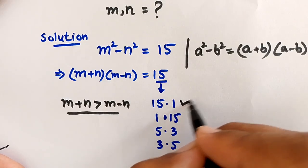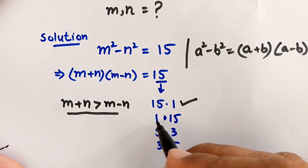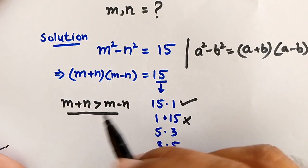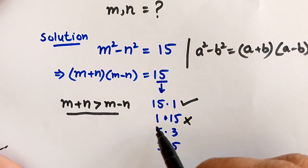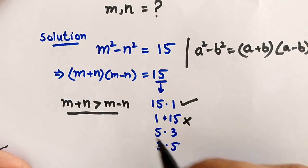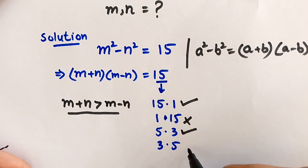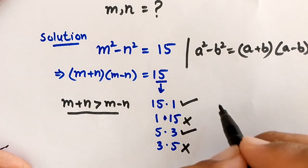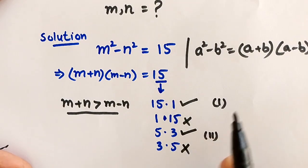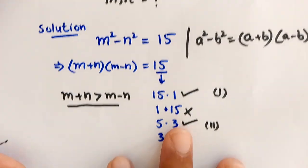Applying the condition that m+n must be greater than m-n: Case 1 (15×1) is valid because the first factor is greater. Case 2 (1×15) is impossible because the first number is smaller. Case 3 (5×3) is valid, and Case 4 (3×5) is not. So we have two valid cases: Case 1 and Case 3.